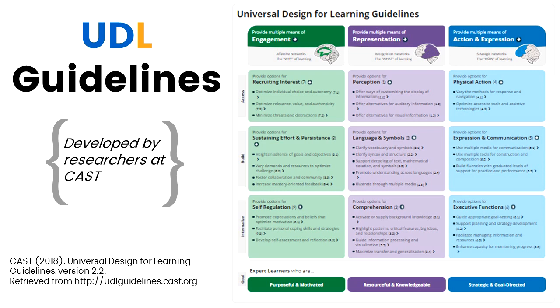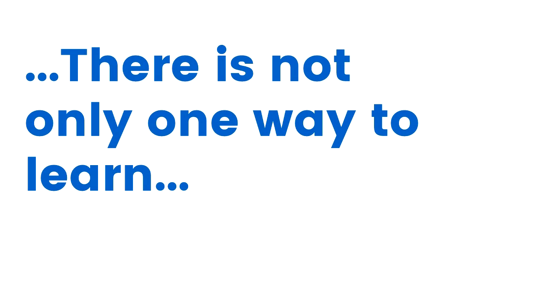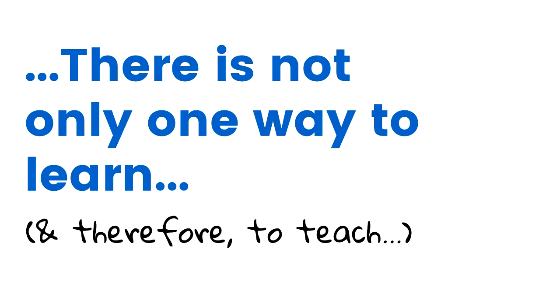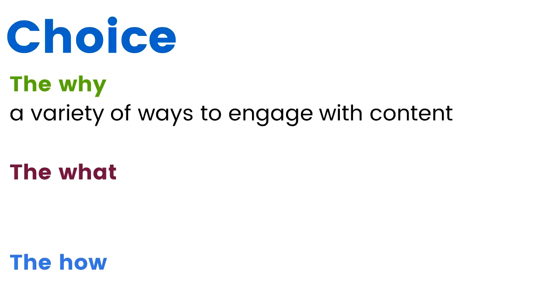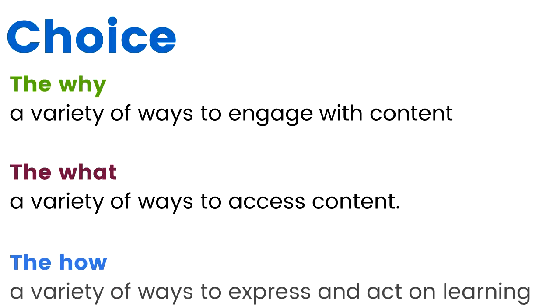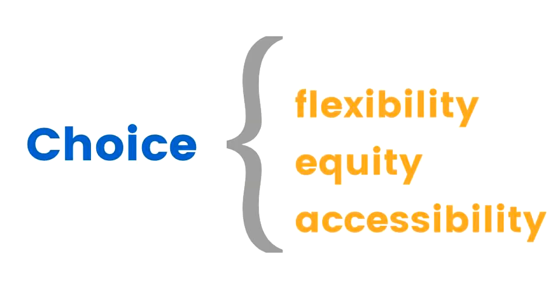What about this idea that there's not only one way to learn? Because that brings along with it the idea that there's not only one way to teach. An integral element of each one of those principles has to do with choice — but not too much, because that can be really overwhelming. However, if you're able to provide a certain amount of choice in regards to why we're engaging with content, what we're learning, and how we're going to be learning, then we're really beginning to encompass the flexibility, equity, and accessibility that is at the heart of Universal Design for Learning.